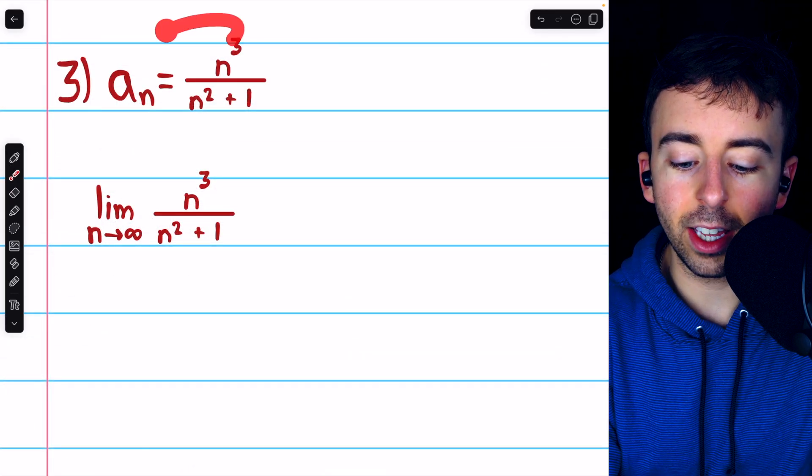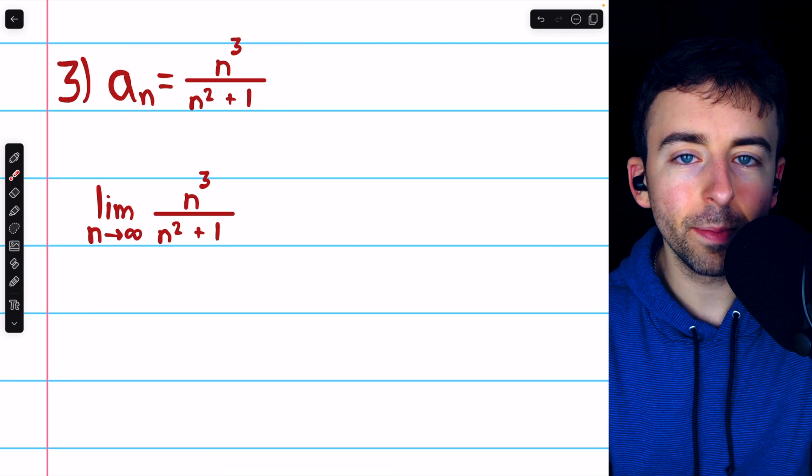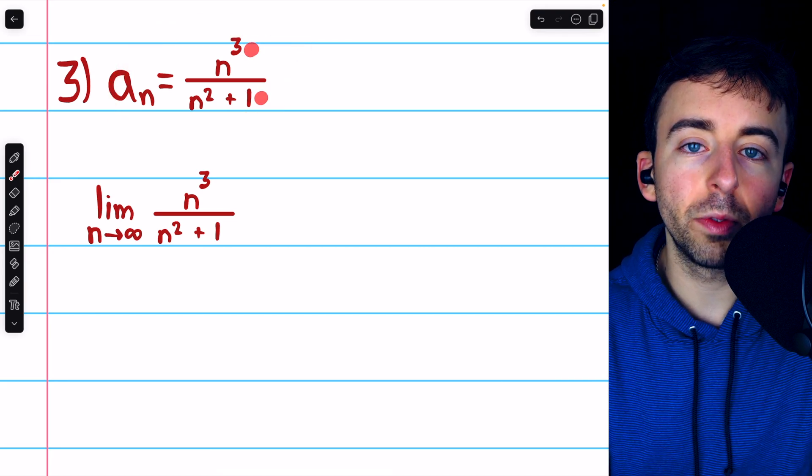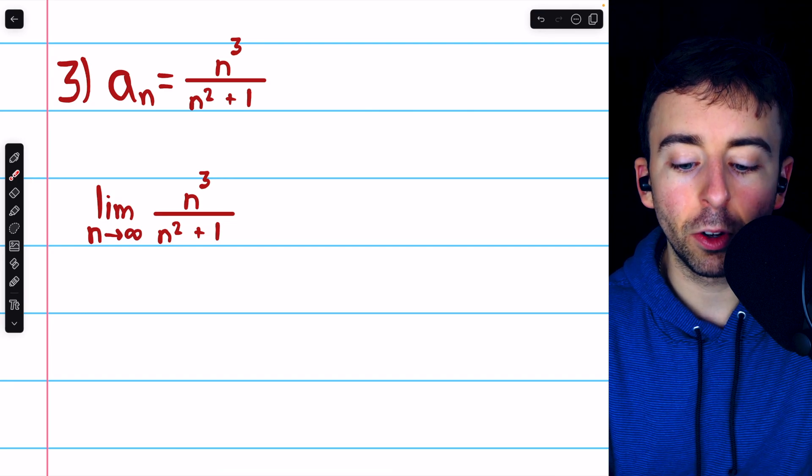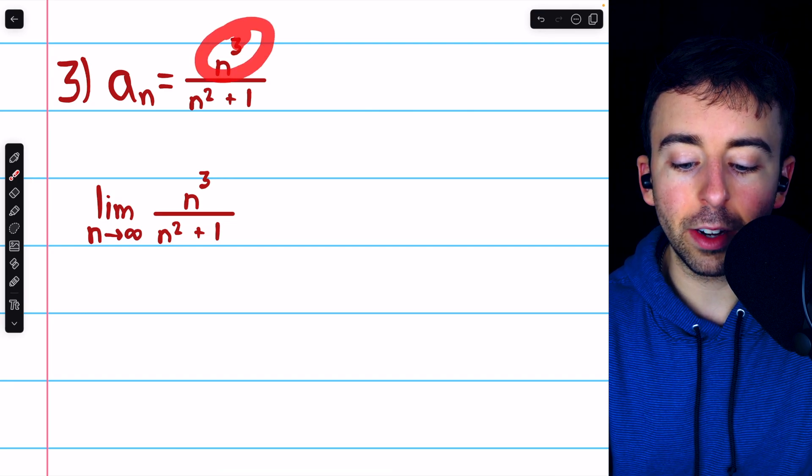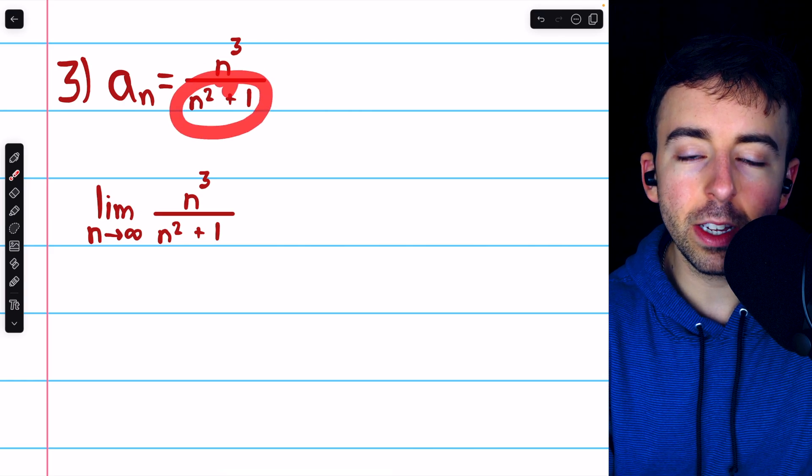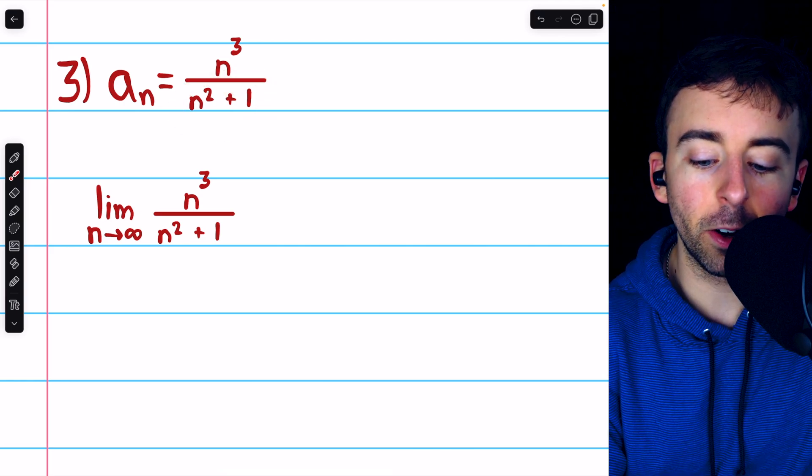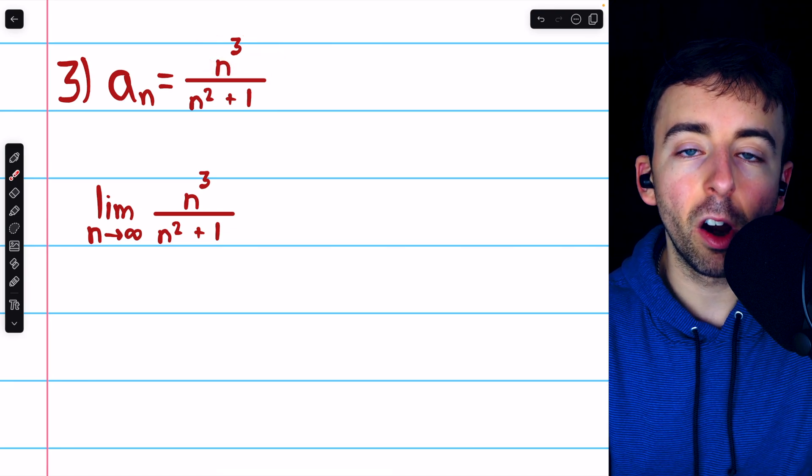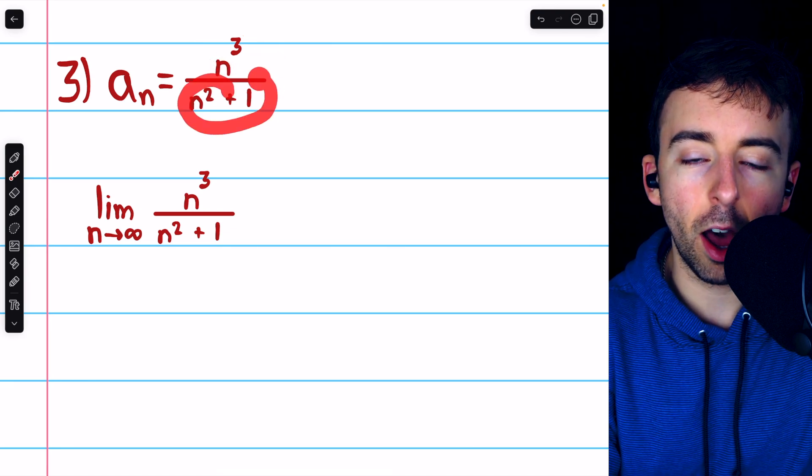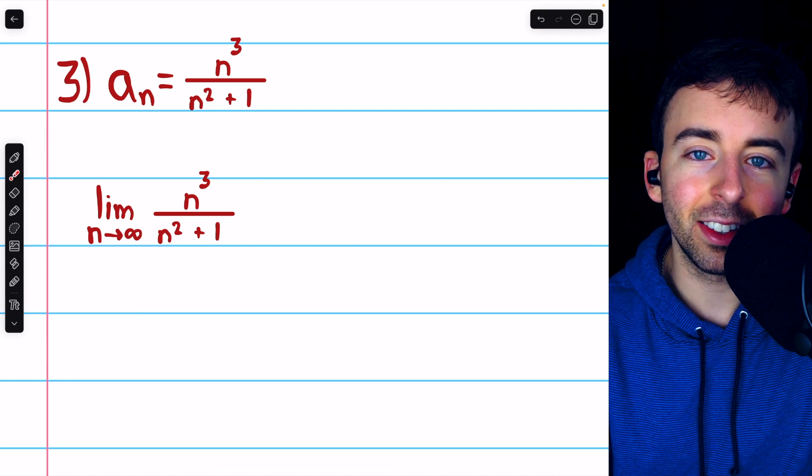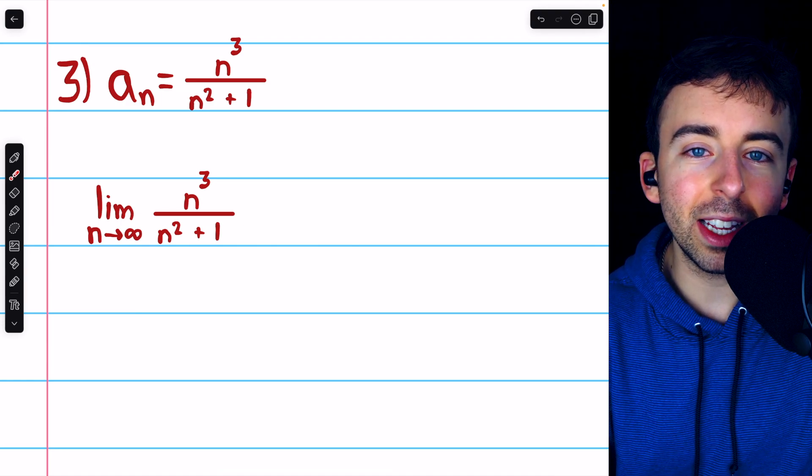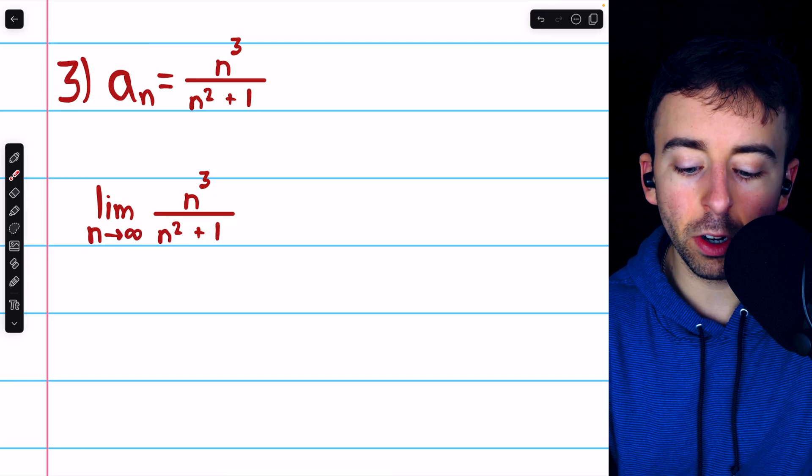Here's the third example, n cubed over n squared plus 1. This looks a little bit like the first example, because we have a ratio of two polynomials, but they don't have the same degree. The degree of the numerator is 3, and the degree of the denominator is 2. So really what's going to happen here is the numerator is going to get arbitrarily large more quickly than the denominator. If the limit doesn't exist, the sequence just diverges to infinity.